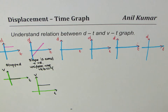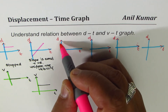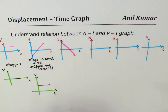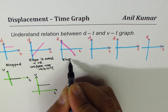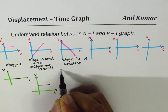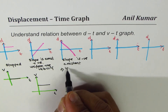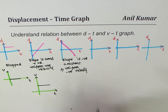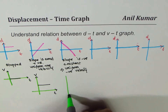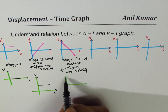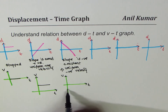In the third case, displacement is decreasing with time — like an object that starts far away and comes closer at a constant speed. The slope of the displacement-time graph is negative but constant, which means we are talking about uniform negative velocity. On the velocity-time graph, this appears as a horizontal line below zero.